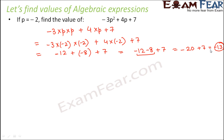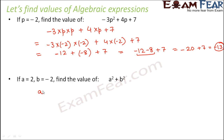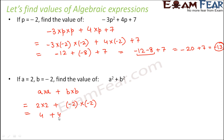We were able to find this value only because the value of p, which is the variable in this expression, is given. Let's try another example. If a is equal to 2 and b is equal to minus 2, find the value of a squared plus b squared. So a squared means a into a, and b squared means b into b. The value of a is 2, so 2 into 2, plus the value of b is minus 2, so minus 2 into minus 2. This gives 4 plus 4, which equals 8.